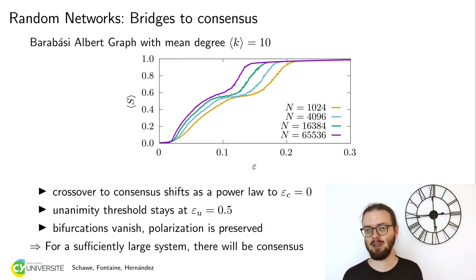What happens if we look at a random network? In this case, it's a scale-free Barabási-Albert network with a similar degree. And it again looks different. We don't see this crossing of all the curves on one point anymore. In fact, it looks like everything is shifting to the left for larger system sizes. Do we even have a threshold value anymore?